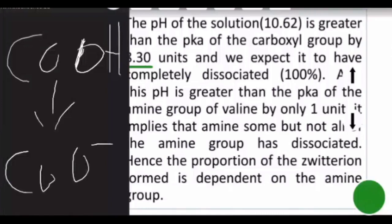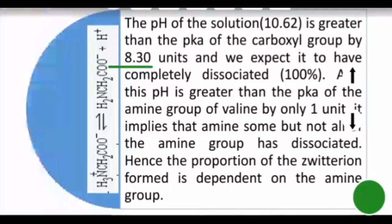For the amine group, the difference between the pH and pKa2 is only one unit, which implies that some but not all of the amine group has dissociated. The percentage of zwitterion formed will therefore be dependent on the amine group, since all of the carboxyl group has already dissociated. We will use the amine group for our calculations — this is the core step of this problem.